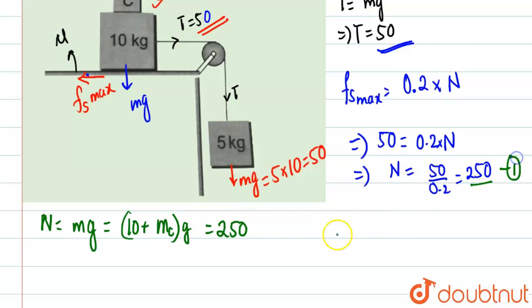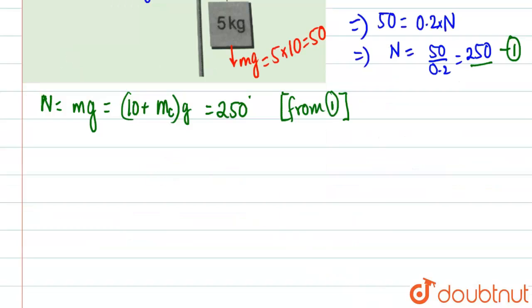Now we're going to solve it and find out mass of C. We'll have 10 plus mass of C into 10, which is g, will be equal to 250. We'll cancel this 10 with 250 by 10. We're left with 10 plus Mc equals 25.